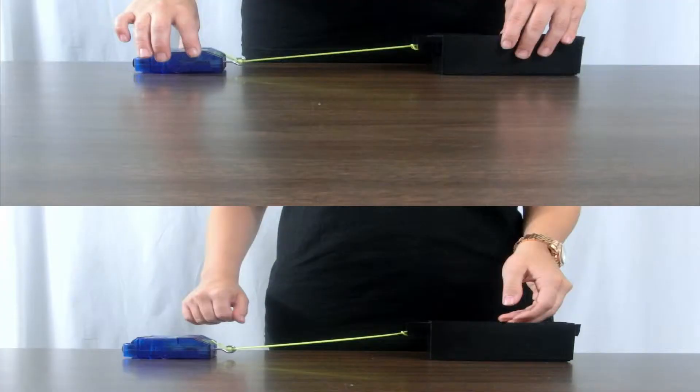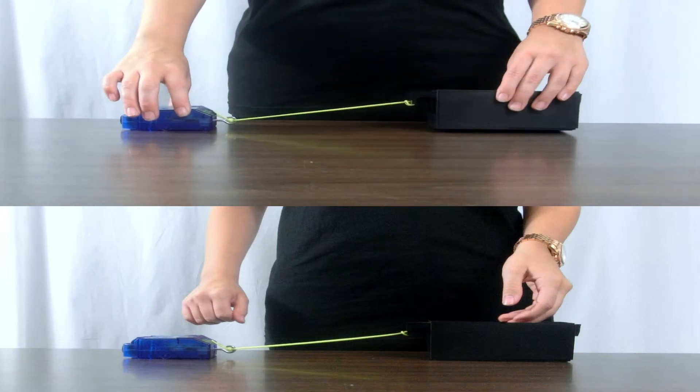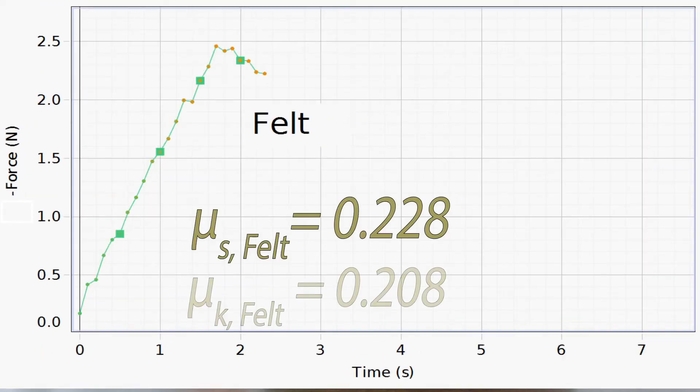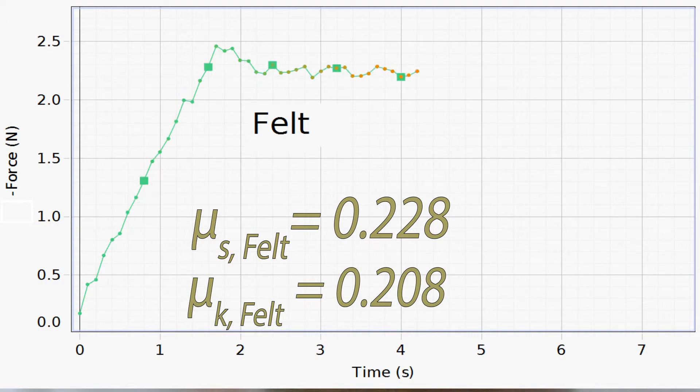We can do the same experiment with the felt and plastic surfaces. For the felt, the static coefficient of friction is 0.228, and the kinetic coefficient of friction is 0.208.